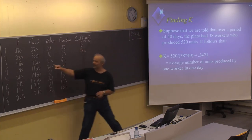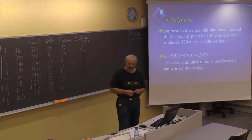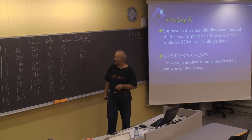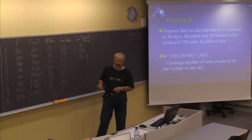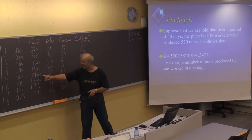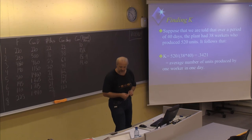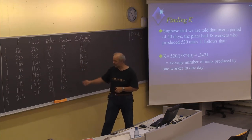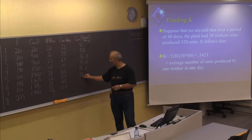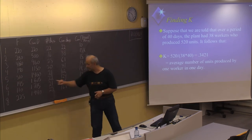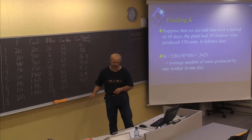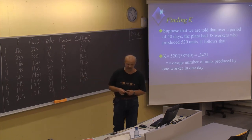We divide 960 by 61 and get 15.74. We divide 1150 by 81, getting 14.20. Then 1460 divided by 102 is 14.31. 1605 divided by 124 is 12.94. 1715 divided by 145 is 11.83. And finally, 1940 divided by 167 is 11.62.